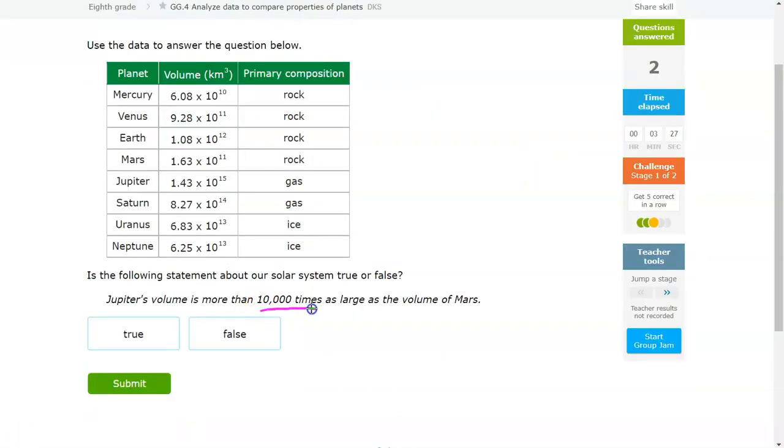Alright, so this time we're going to look at Jupiter and see whether Jupiter's volume is 10,000 times as large as the volume of Mars. What you'll notice in 10,000 is that there are 1, 2, 3, there are 4 zeros. We're going to take that into account when we do this. We know that Jupiter is 1.43 times 10 to the 15th. We know Mars is 1.63 times 10 to the 11th. So in order to see if it's more than 10,000 times the size of the volume of Mars,